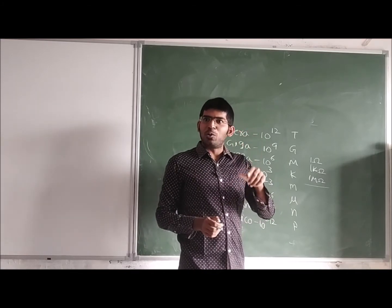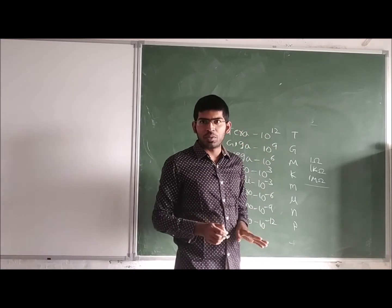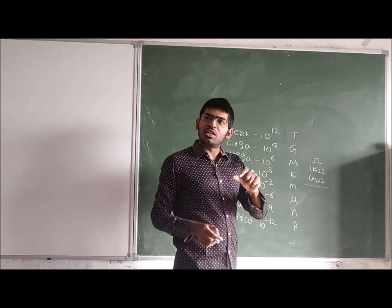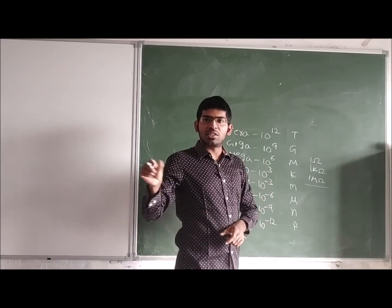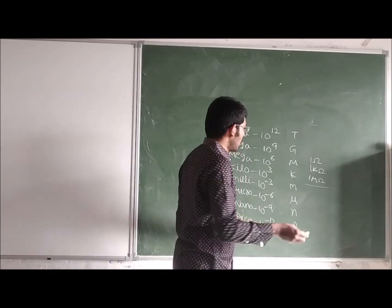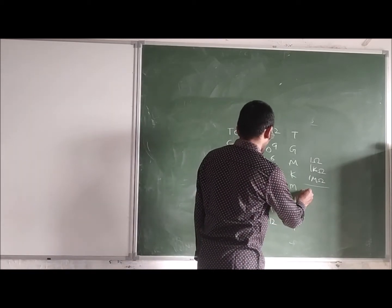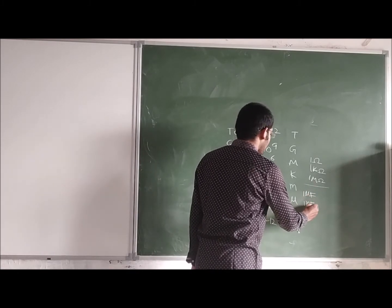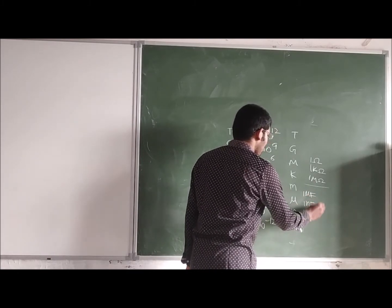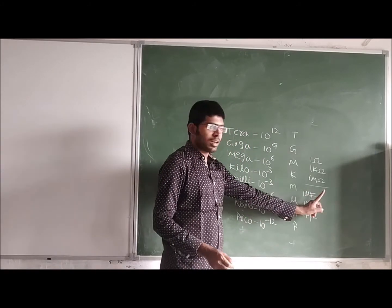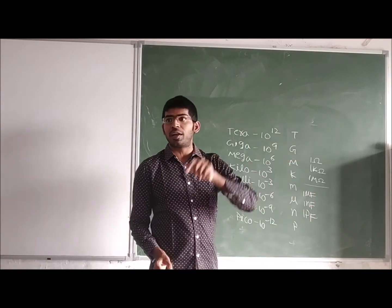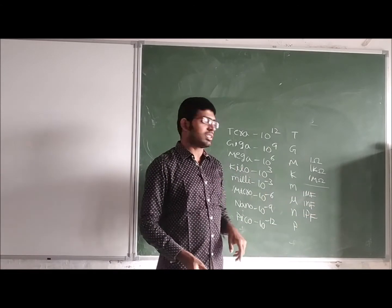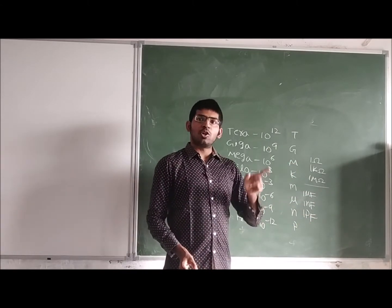But in capacitors, the capacitance unit is farad. We will discuss in later classes. One micro farad, one nano farad, one pico farad. One micro farad means 10 to the power minus 6 farads, one nano farad means 10 to the power minus 9 farads, one pico farad means 10 to the power minus 12 farads.